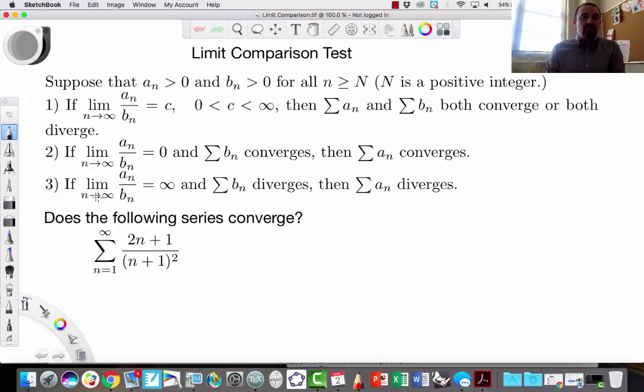Number three here, we have the limit of a sub n over b sub n goes to infinity, meaning which one's going faster? It means that the top one is going faster than the bottom. So what that means is if the bottom diverges, then the top diverges. So basically, these two can be said kind of in multiple different ways.